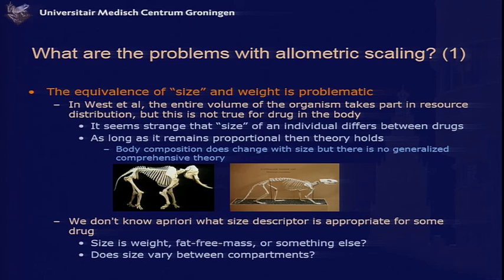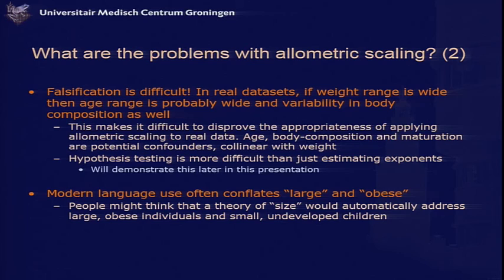We don't yet have a better way to describe size than using weight, but it is problematic in theory. We don't know a priori what size descriptor might be best for some drugs — it might be weight, fat-free mass, or something else. We don't know a priori whether different compartments might represent different tissues scaling differently with body size. Probably the biggest problem with allometric scaling is that falsification is quite difficult. In real data sets, where weight range is wide, age range and variability in body composition are probably equally wide. Age, body composition, and maturation are confounders — they will be collinear with weight — and that makes it very difficult to separate their influences and to falsify allometric scaling.